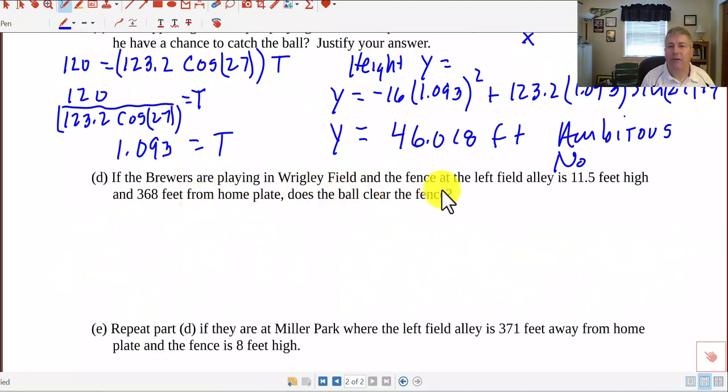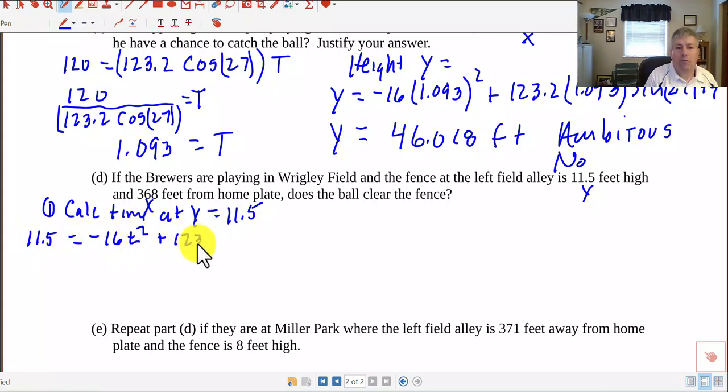Let's go on to question D. If the Brewers are playing in Wrigley Field, and the fence at the left field alley is 11.5 feet high, and 368 feet from home plate, does the ball clear the fence? There's a couple ways to do this. We have both a Y and an X value here. What we have traditionally done is we want to find out the time at which it's 11.5 feet high. So 1, calculate time at Y equals 11.5. So we'd have to put that into our Y equation.